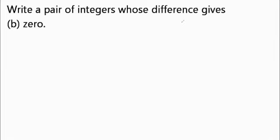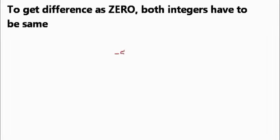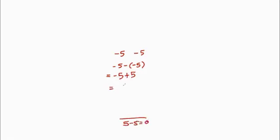To get zero, unlike with sums where we use the additive inverse, here we subtract the same number. So if my first number is minus 5, the second number should also be minus 5. Minus 5 minus minus 5 — same signs convert to positive — becomes minus 5 plus 5. Different signs, so we do subtraction: 5 minus 5 equals 0.